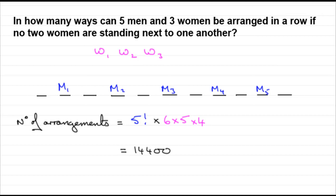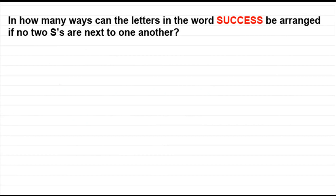Now I did say that this tutorial consists of two examples. And the second example is a bit harder than the one that we've just been doing. Now what we have here is in how many ways can the letters in the word success be arranged if no two S's are next to one another.